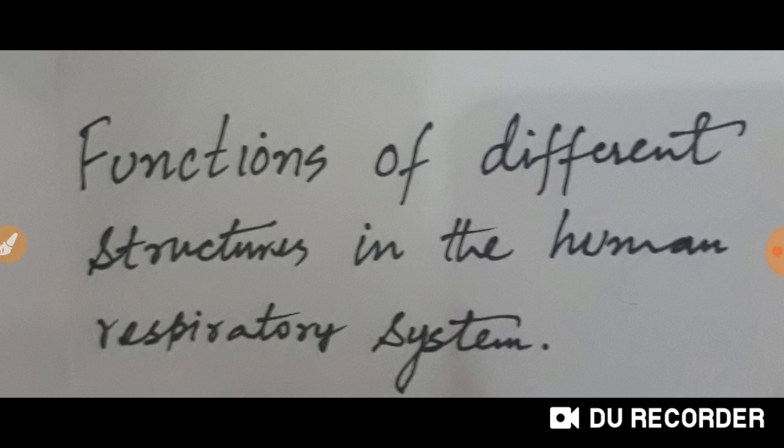Then after bronchi, there are bronchioles. Bronchioles are narrow, tree-like branches of bronchi through which gases diffuse to and from alveoli.